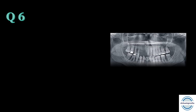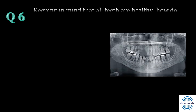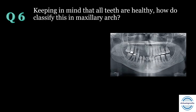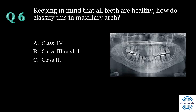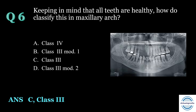Question number six: keeping in mind that all the teeth are healthy, how will you classify the edentulous space in the maxillary arch in the given figure? Options: A. Class 4, B. Class 3 mod 1, C. Class 3, D. Class 3 mod 2. The answer is C, Class 3. Why not Class 4? Because the edentulous space is not crossing the midline.